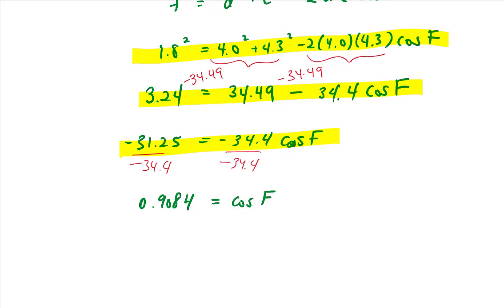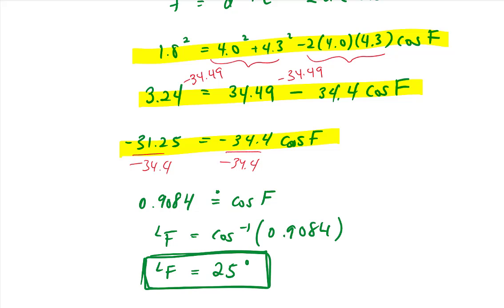We want to find an angle. So remember, if we want to find an angle, we need to take the cos inverse of the ratio. So the cos⁻¹ of 0.9084. And if you type that into your calculator, you see you end up with approximately a 25 degree angle. And there is the smallest angle in that triangle.